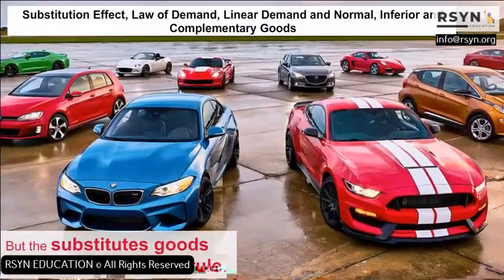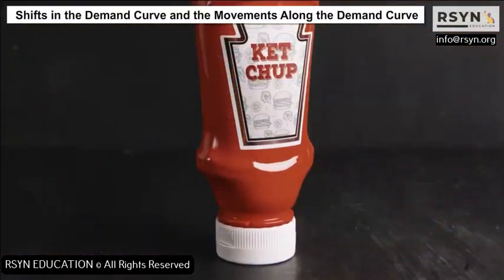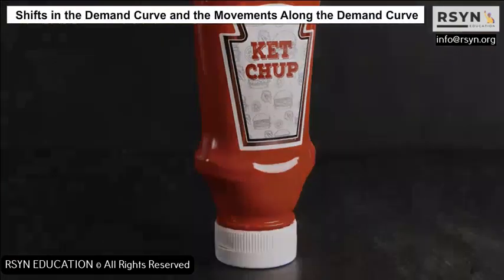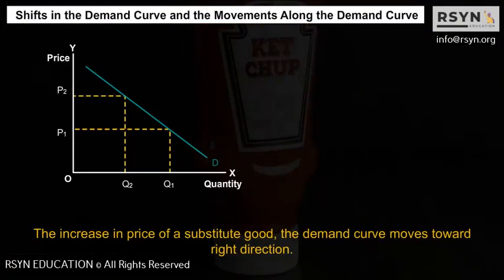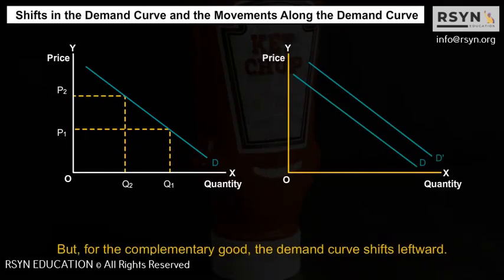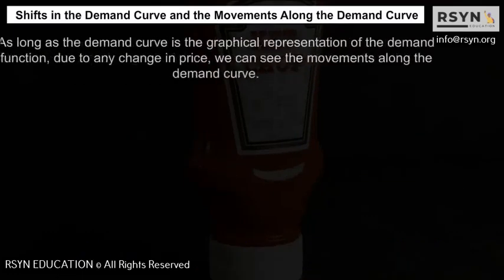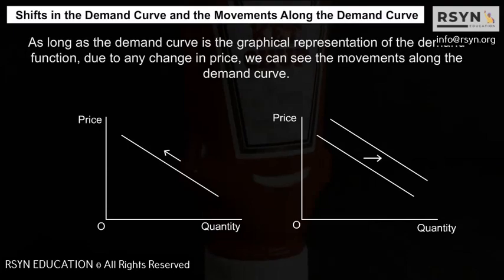Substitute goods follow the opposite rule. For shifts in the demand curve: when the price of a substitute good increases, the demand curve moves to the right. For a complementary good, the demand curve shifts leftward. As long as the demand curve is the graphical representation of the demand function, any change in price causes movements along the demand curve.